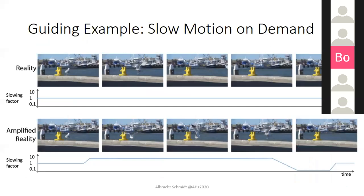Our guiding example is the following. There are two streams — in the first, we see a bird sitting at a harbor wall. At normal speed, the bird flaps its wing and it's gone very quickly. There is one interesting moment: when the bird leaves and starts its wings. The question is: could amplified reality slow down once there is motion? Once we concentrate on that motion, we slow down reality to see the bird, and then once it's gone, we speed back up to return to normal time.